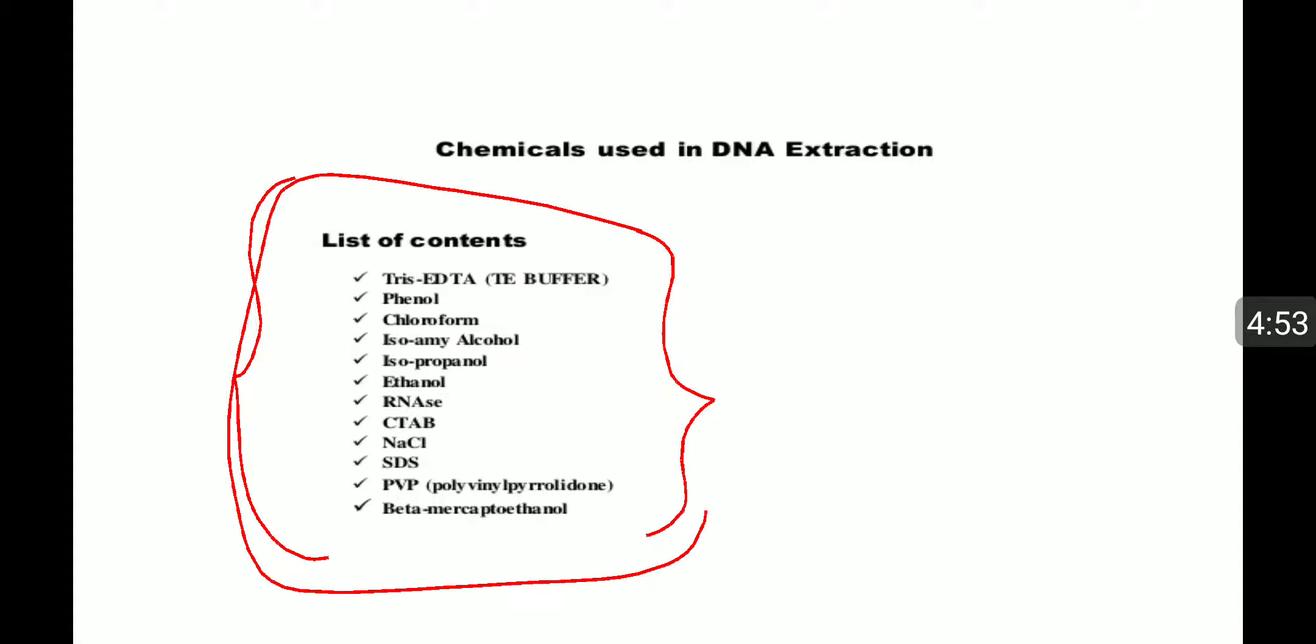These chemicals are used for many processes like cell wall degradation and removal of phenols, RNAs, lipids, and all those. We have to remove everything and extract only the DNA from plant samples. If you want to know extra about these chemicals, view my other video.